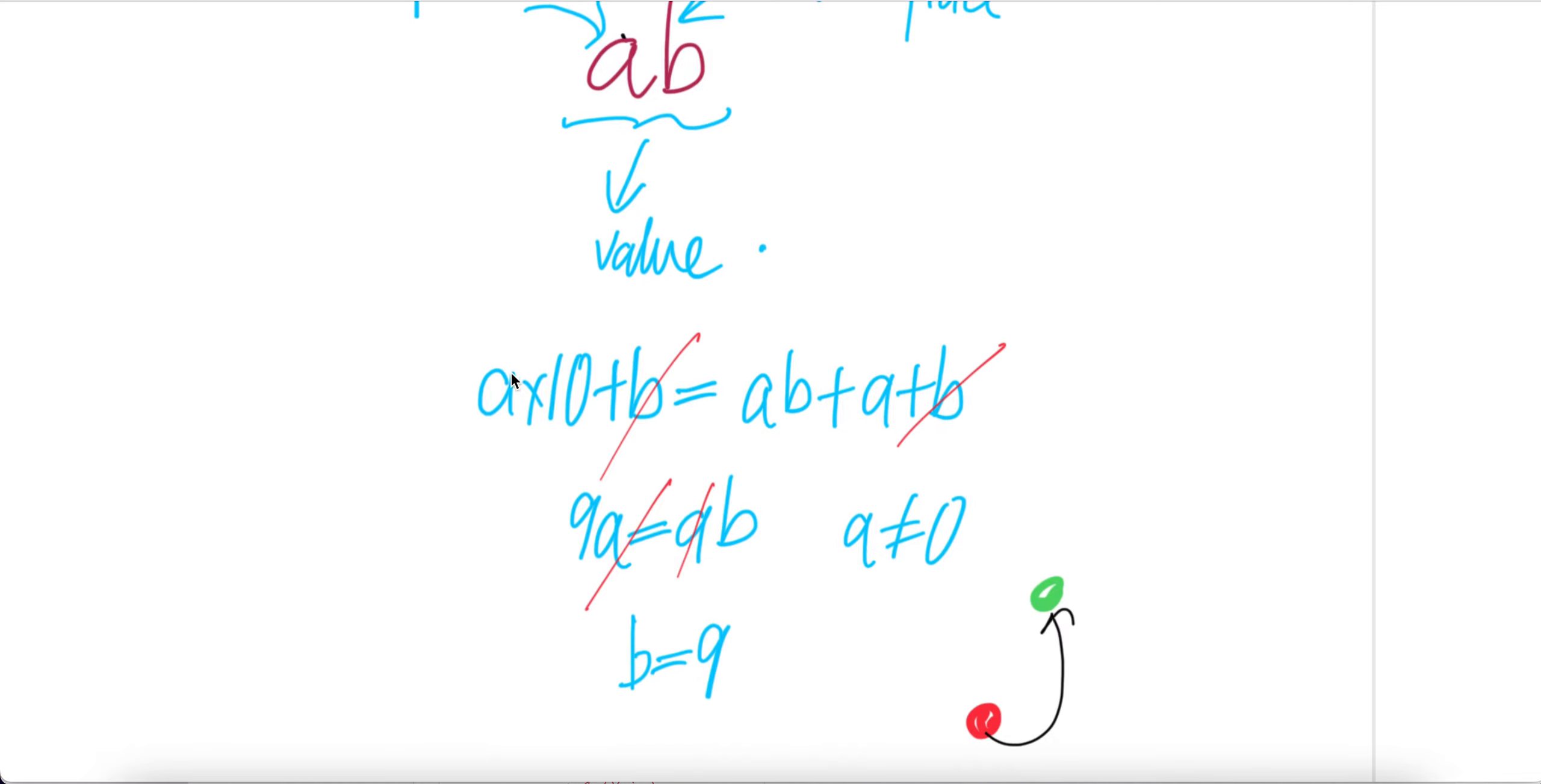B and B cancel. And then you get 10A. Bring this over, you get 9A, 10 minus 1 is 9A, and then you have AB.